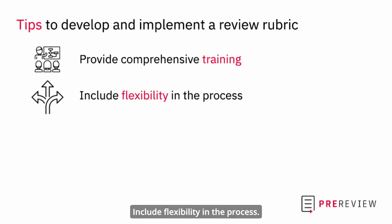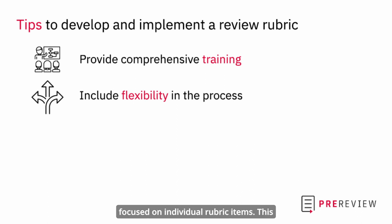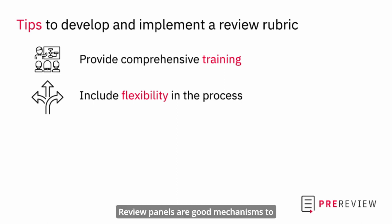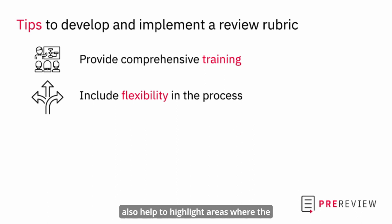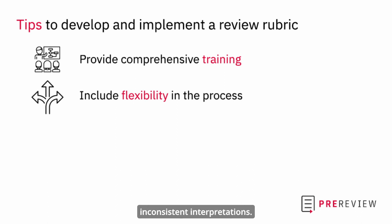Include flexibility in the process: encourage reviewers to consider the entire proposal rather than getting too focused on individual rubric items. This could help in recognizing the broader value and potential of a proposal. Review panels are good mechanisms to discuss and provide feedback outside of the limitations of the rubric, capturing unique aspects of each proposal. These discussions also help highlight areas where the rubric may be leading to inconsistent interpretations.